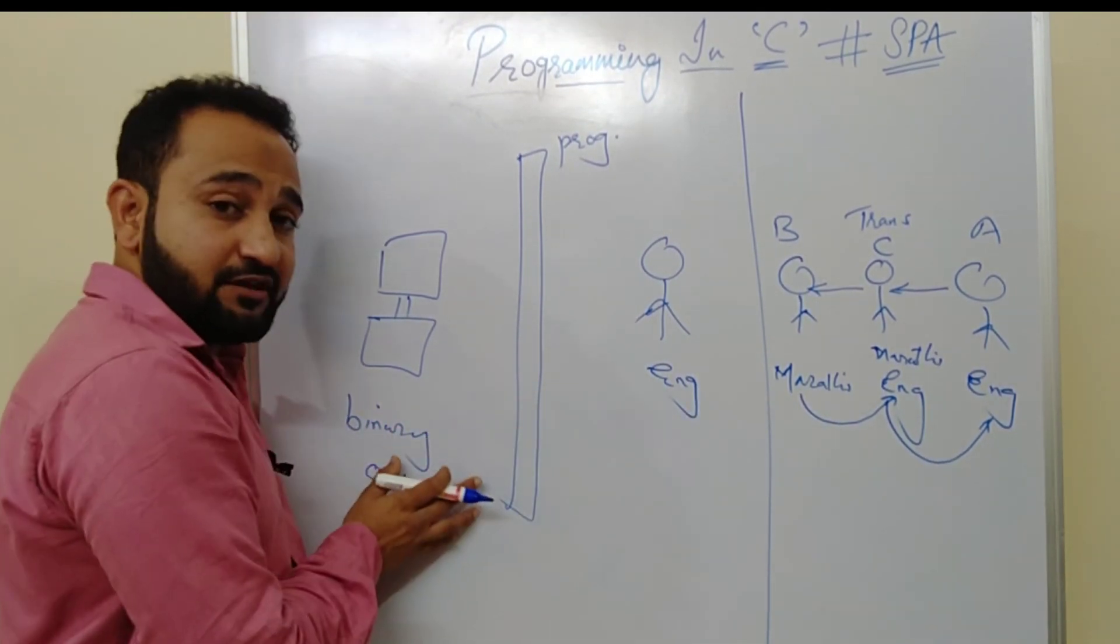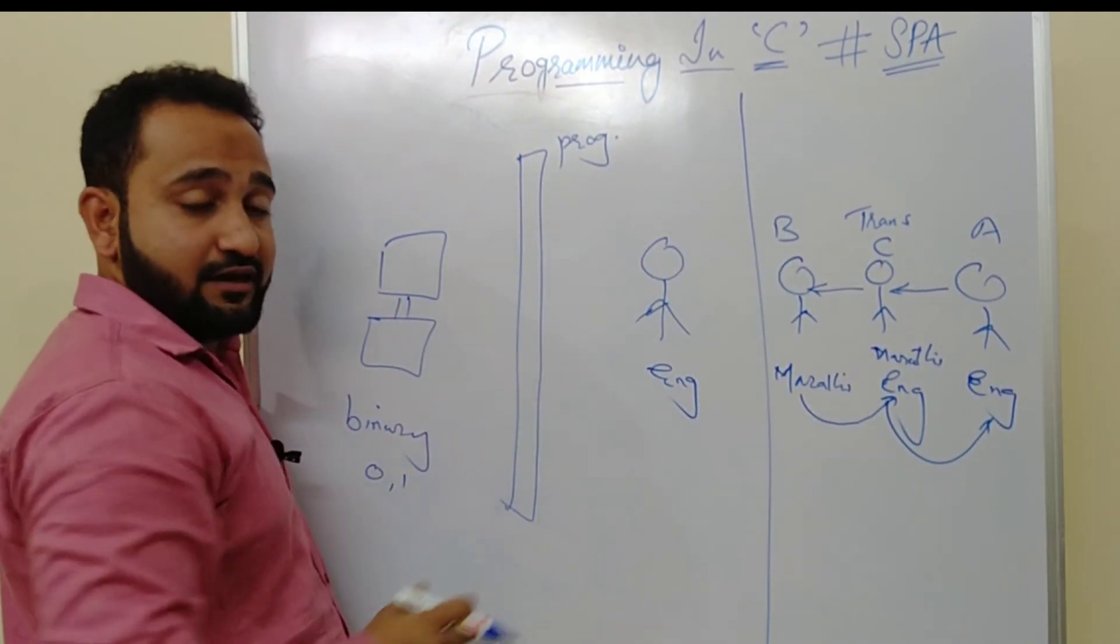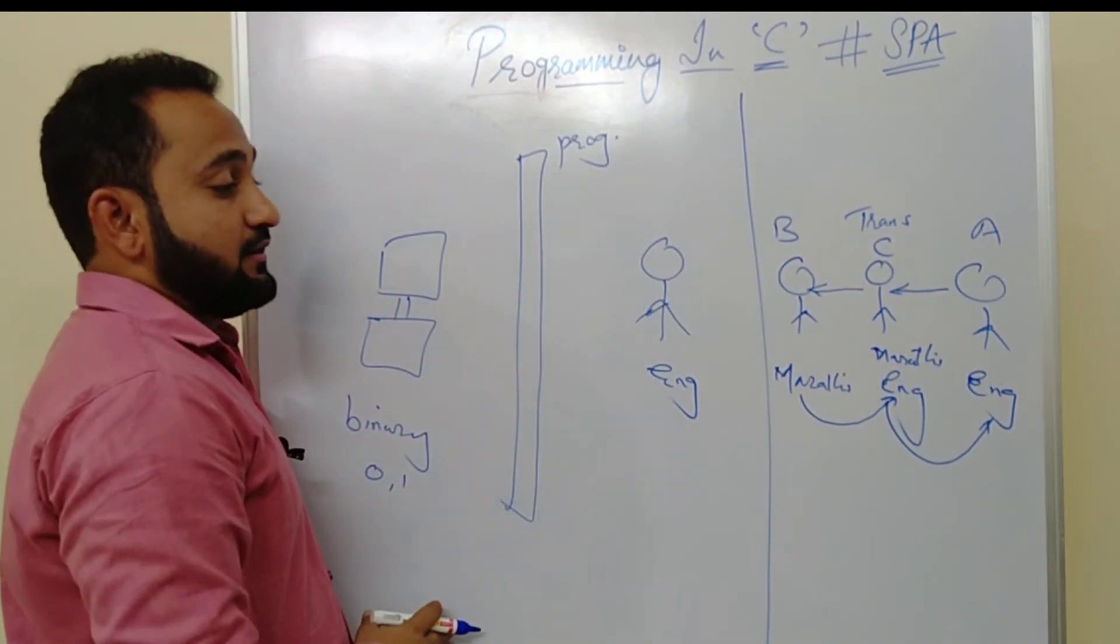Then it will convert that thing into Marathi language and communicate the same thing in Marathi to person B. B will understand the same thing, will understand what exactly you want to say, and will reply in Marathi to the translator. It will again understand this thing and communicate the reply of B to A in English language. Exactly the same thing happens in programming also. I will try to map the real world with programming so as to understand it more clearly.